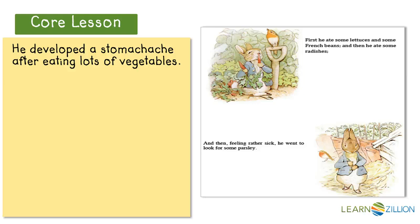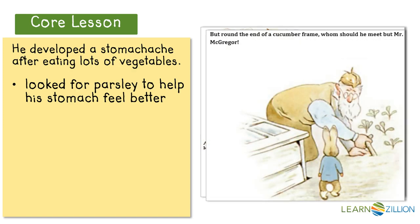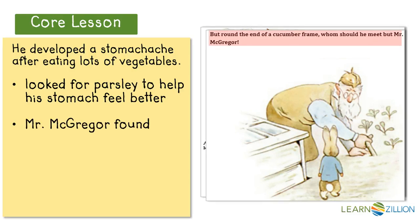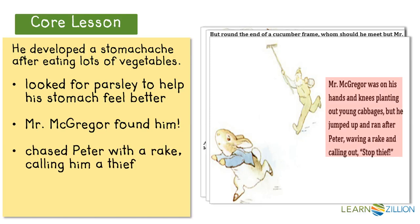First he ate some lettuce and some French beans, and then he ate some radishes. And then, feeling rather sick, he went to look for some parsley. He went to look for parsley after his stomach was not feeling well and he wanted to feel better, but this just started a whole sequence of events in the garden. But round the end of a cucumber frame, whom should he meet but Mr. McGregor? Mr. McGregor was on his hands and knees planting out young cabbages, but he jumped up and ran after Peter waving a rake, calling out, stop thief! So I know that Mr. McGregor chased Peter with a rake, calling him a thief.